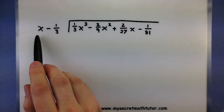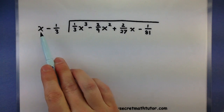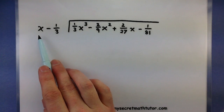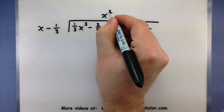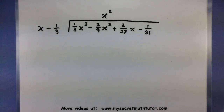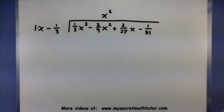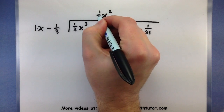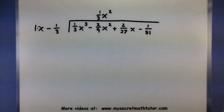So, we think to ourselves: what would I have to multiply x by in order to get 1/3 x³? Don't let those fractions mess you up — just go ahead and start off with the x's. What would you have to multiply x by in order to get x³? x² would be part of it. Now let's think about the numbers: 1 multiplied by what would give you 1/3? Well, 1/3 is the only thing that works. So, 1/3 x² is what I need to put in my quotient.